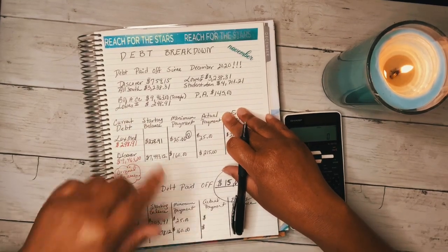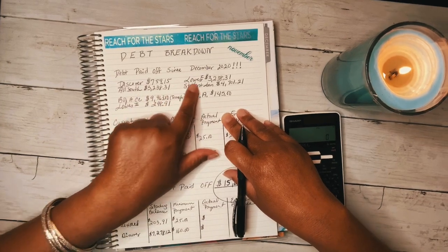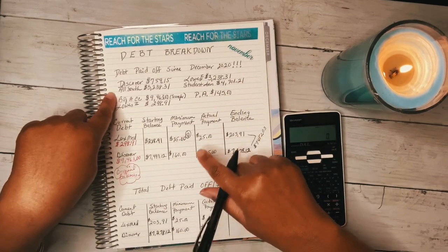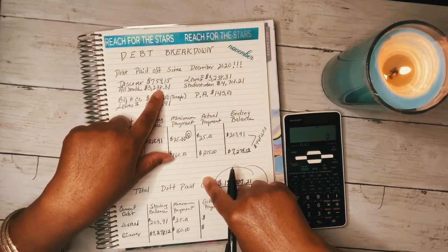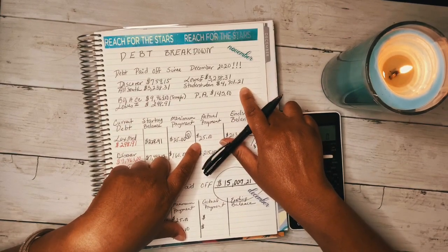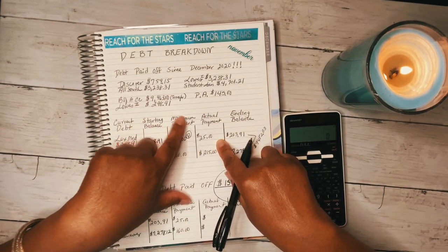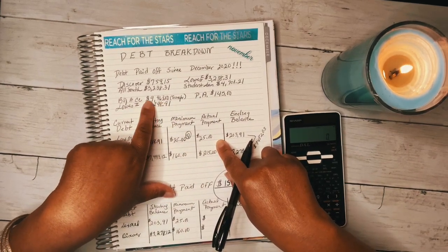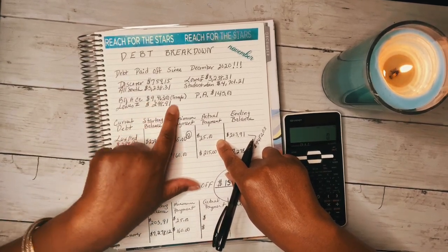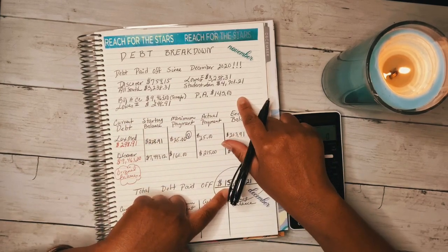These are the things I paid off: my Discover card, $759.15; my first Lowe's, $3,238.31; my second Lowe's, $3,238.31; my student loan, $4,701.21; my Bank of America had to transfer so it got paid off and was transferred to my Discover card, that was $9,463; Lowe's two bill, $290.91; I had a medical bill, $145.